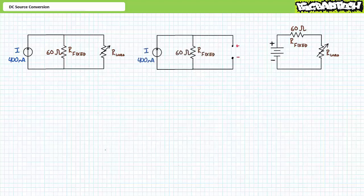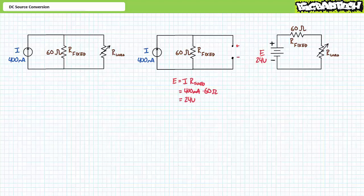Now we need to remove the variable load resistor and isolate the DC current source and the fixed parallel resistance. To determine the value of the equivalent voltage source, one must solve for the open circuit voltage. With the load resistance removed, the open circuit voltage will be the voltage across the parallel resistance with all current traveling through it. An application of Ohm's law demonstrates that this is a value of 24 volts. Our equivalent source configuration is therefore a 24 volt fixed voltage source in series with the fixed resistance of 60 ohms.